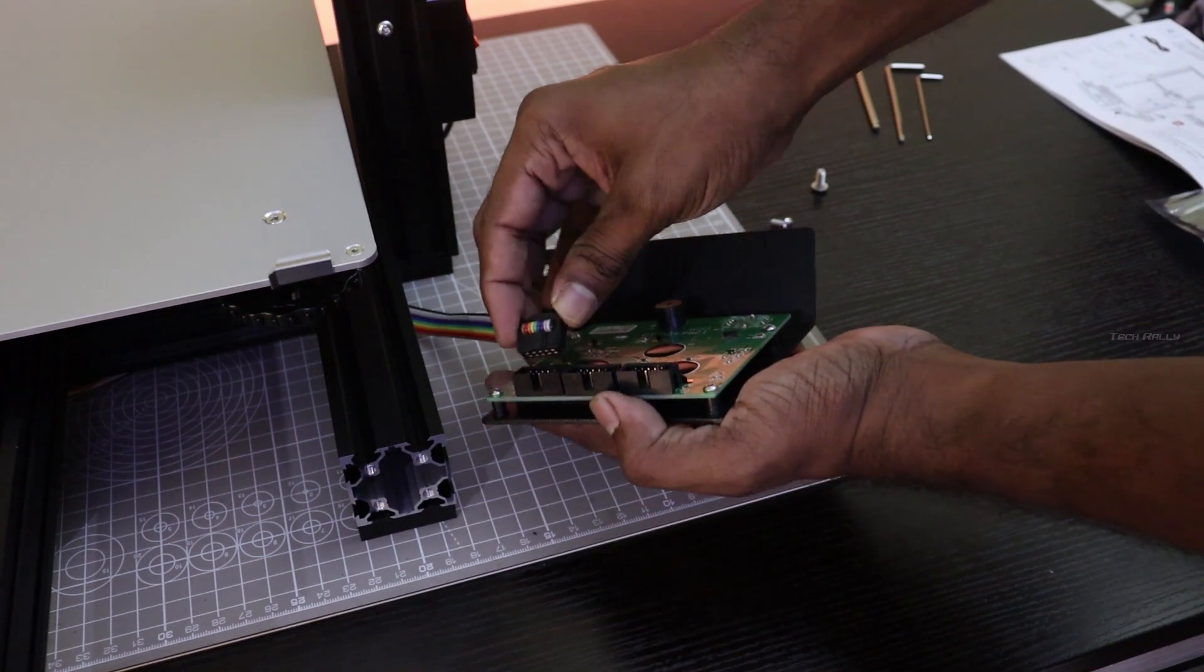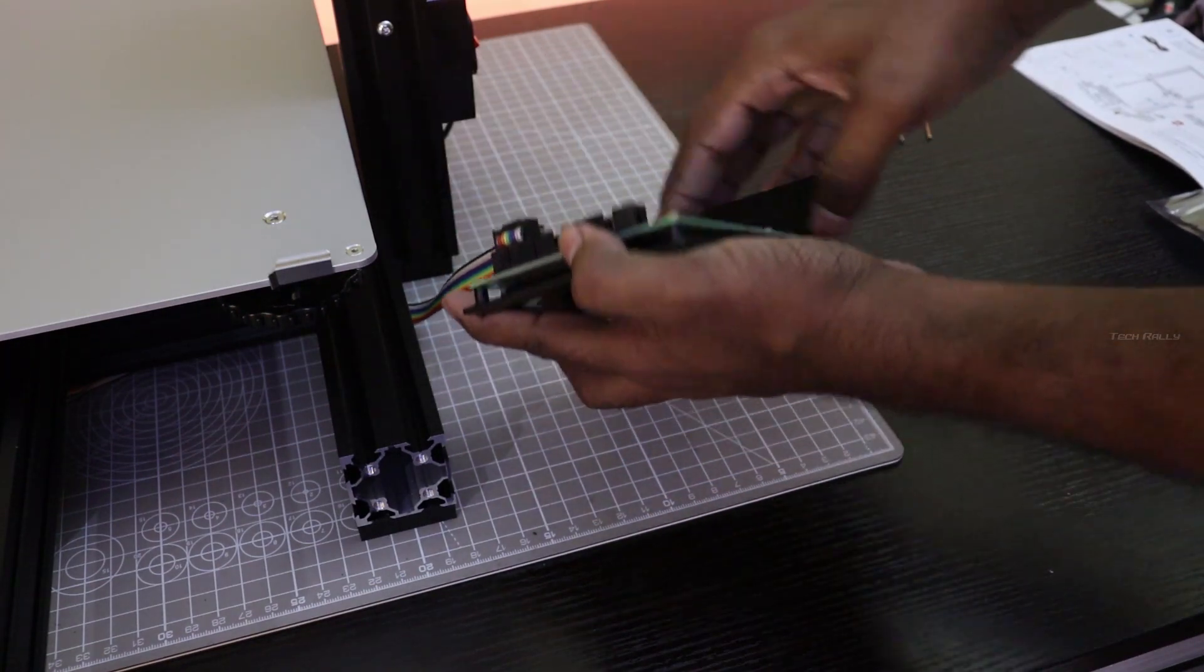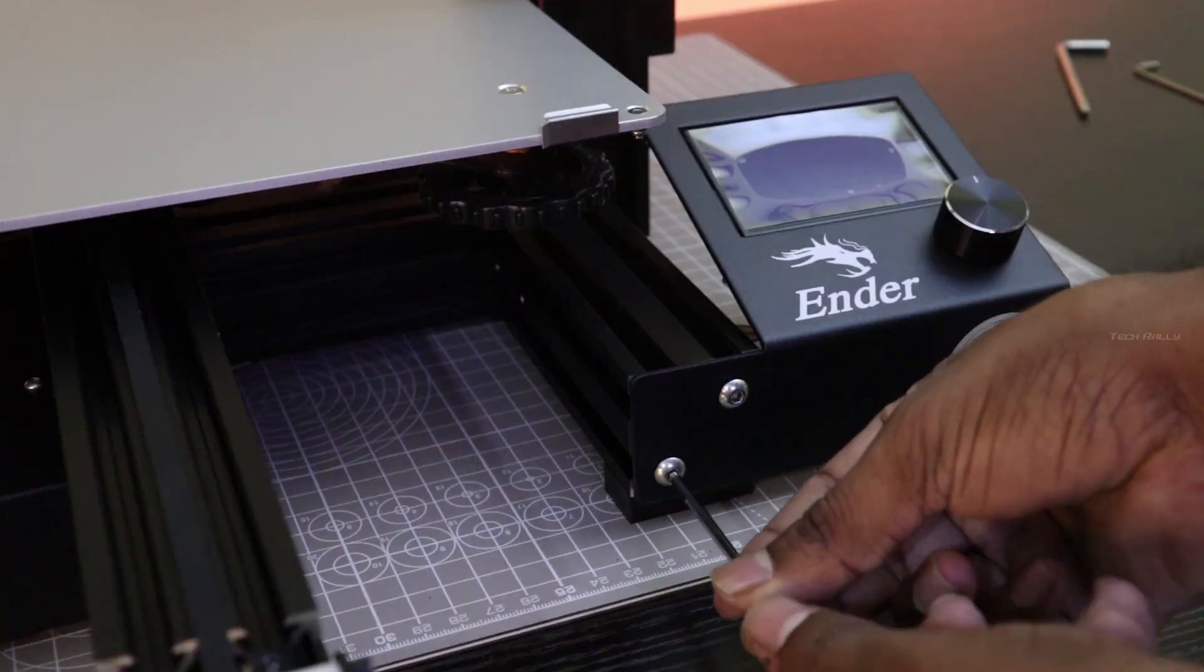Installing the LCD module is very simple by connecting the single ribbon cable and two screws into the aluminum profile.